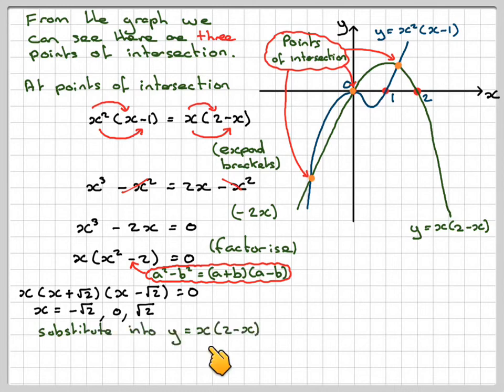Substitute into y = x(2-x). So we've got x = -√2. We'll substitute into that one because it's a quadratic, so it's easier. So we'll get y = -√2(2 - (-√2)). Minus minus is plus, but when you multiply that back in, it will be a minus. So we're going to get -2√2 minus, and -√2 times √2 is 2, so -2√2 - 2.